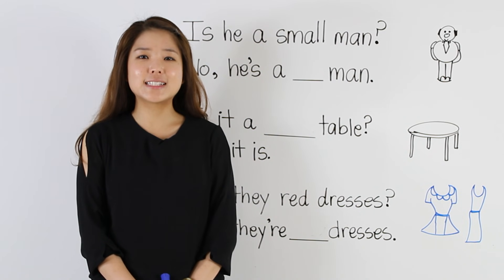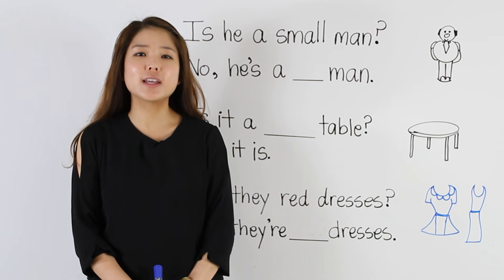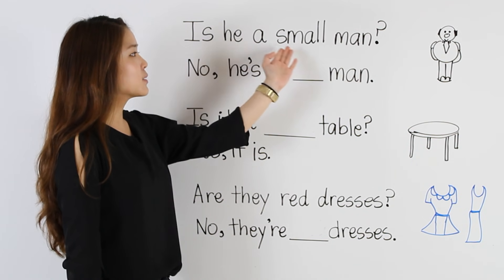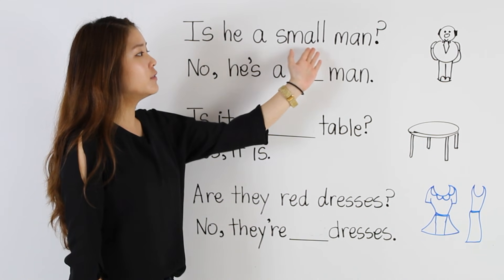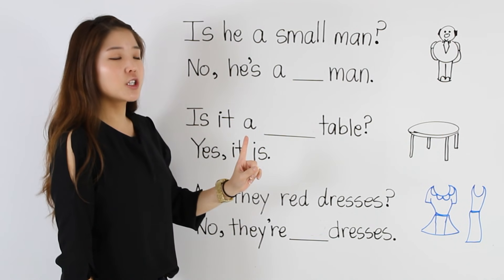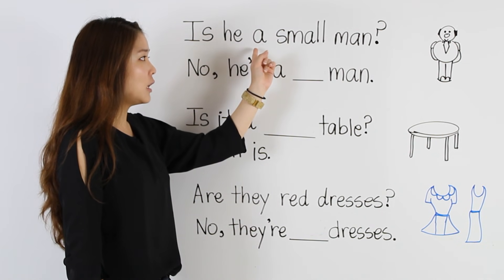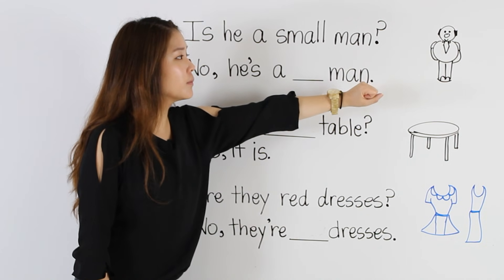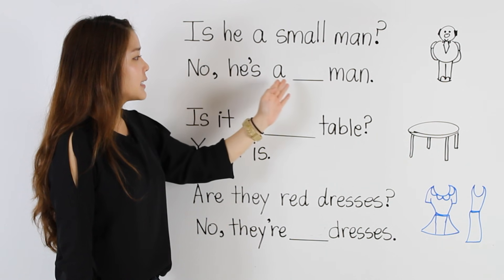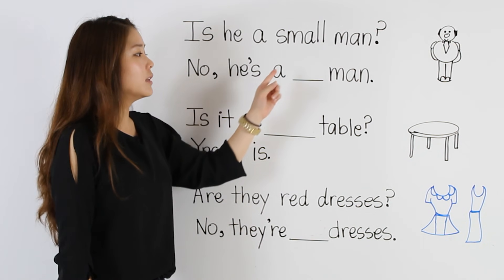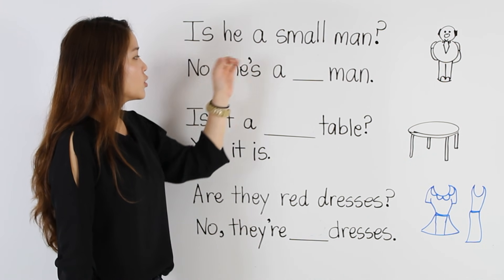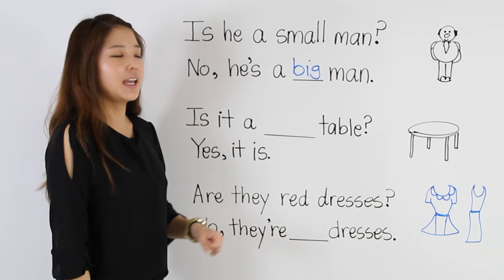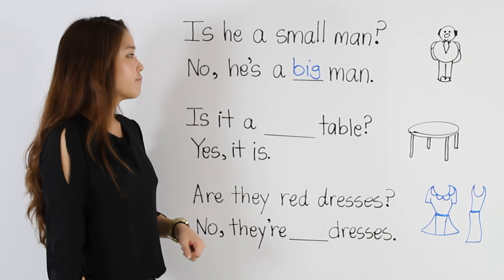Now we're going to practice asking and answering questions using adjectives. We have a man here. I want to ask: is he a small man? We have the adjective small. Notice, even in a question, we have to put the adjective after the article and before the noun. Is he a small man? Well, the answer is no — he's not a small man. So we have to say, no, he's a big man. We're going to use the adjective big.